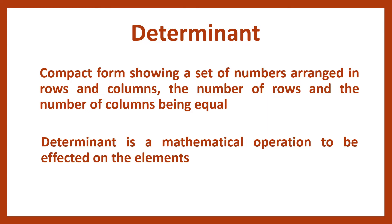The effect of this operation gives rise to a simplified value called the determinant value. We perform the determinant operation on a matrix, and when we do this mathematical operation, we get a single value for the matrix. That value represents all the elements in the matrix. This mathematical operation is called the determinant, and it gives rise to a value called the determinant value.